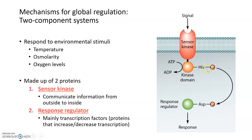The sensor kinase phosphorylates itself and then transmits the signal to the response regulator, which is another protein that, when phosphorylated, can elicit a specific response in the cell. Most response regulators are transcription factors — proteins that increase or decrease transcription. When they are phosphorylated, they can bind to DNA and exert their effects.